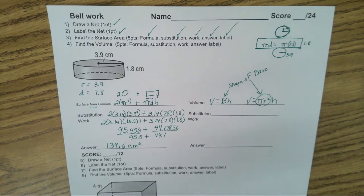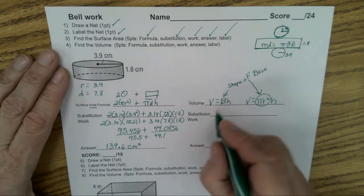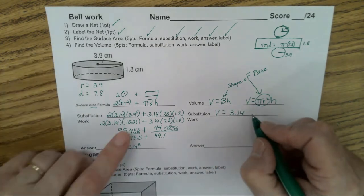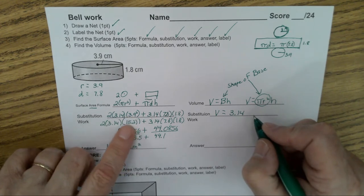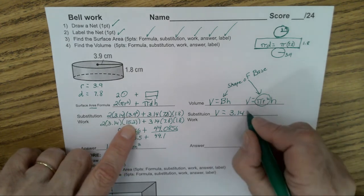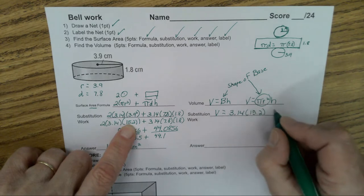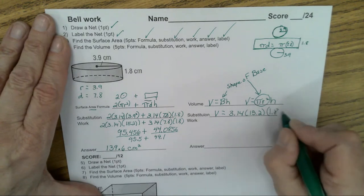So everyone knows a cylinder, we all know the shape is a circle. So now let's do the substitutions. Volume equals 3.14. We already know what our radius squared is. 3.9 times 3.9 is 15.2 times the height, which is 1.8. Any questions?